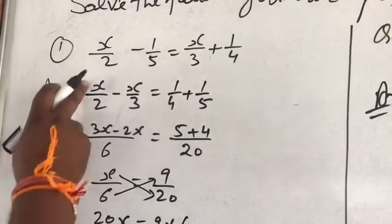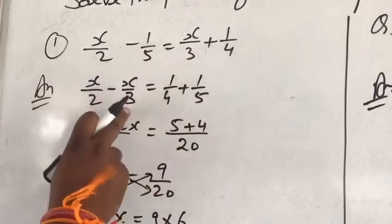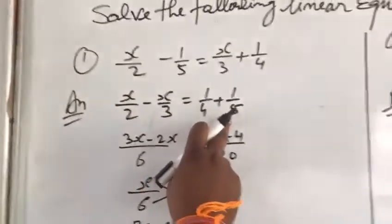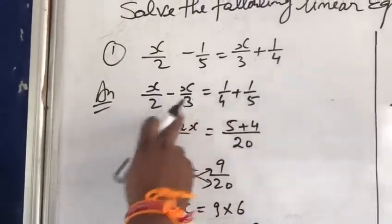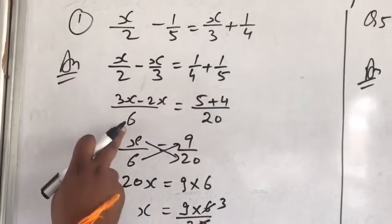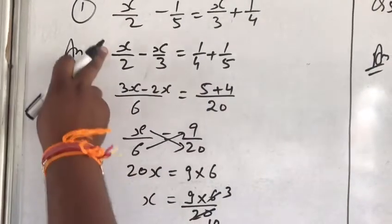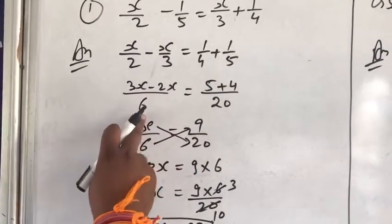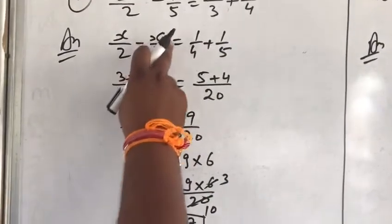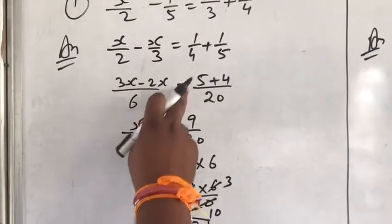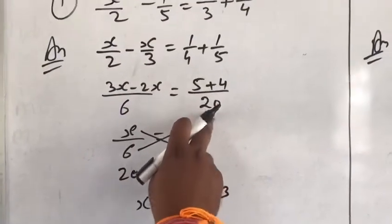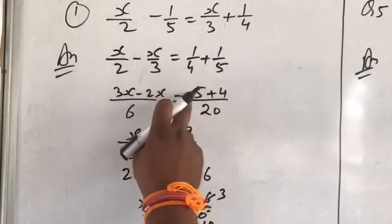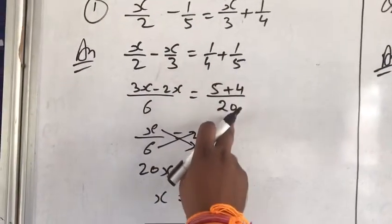The answer is x upon 2 minus x upon 3 equal to 1 upon 4 plus 1 upon 5. Now taking LCM as 6. 2 divided by 6 equal to 3. Then 3 multiplied by x, 3x minus 3 divided by 6 equal to 2. 2 multiplied by x, 2x. Now taking LCM as 20. Then 4 divided by 20 equal to 5. Then 5 into 1 equal to 5 plus 5 divided by 20.